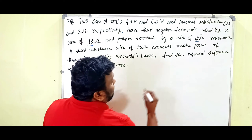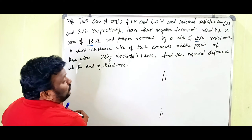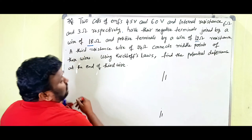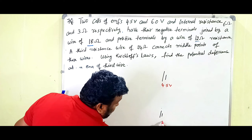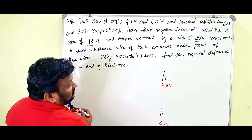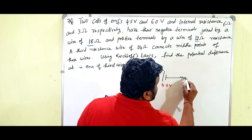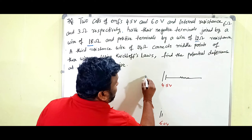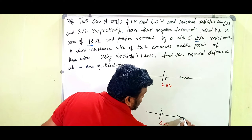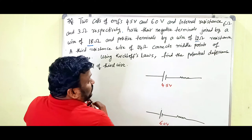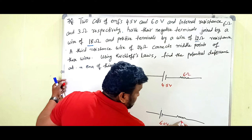There are two cells — this is the first cell and this is the second cell. The EMF of the first cell is 4.5 volts and the EMF of the second cell is 6.0 volts. The first cell has internal resistance 6 ohms and the second cell has internal resistance 3 ohms.